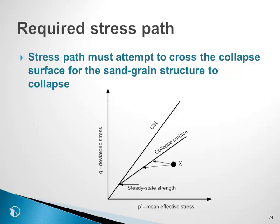In summary, in order for there to be liquefaction and a collapse of the sand grain structure, the stress state must start underneath the collapsed surface — at a point X, for example — and then there must be a stress path, such as increasing pore water pressures, which takes the mean effective stress towards the collapsed surface. So we can already see that the potential for a collapsible grain structure exists when we are underneath the collapsed surface.